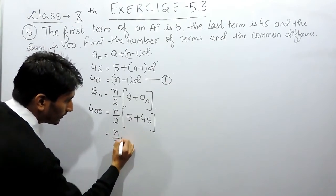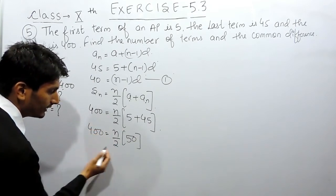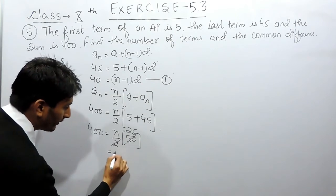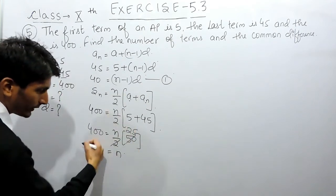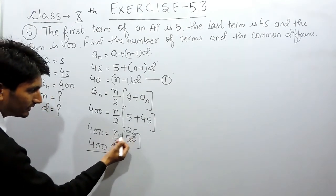this will become 50 and this is equal to 400. So this can be cancelled 25 times and if I have to find the value of n, I have to shift this 25 to the left hand side and then here it is multiplying n.